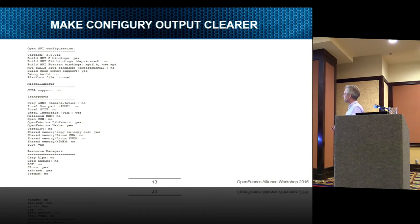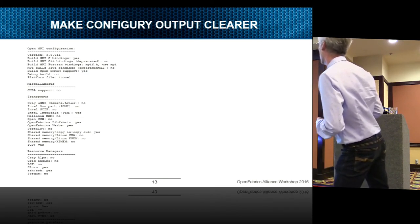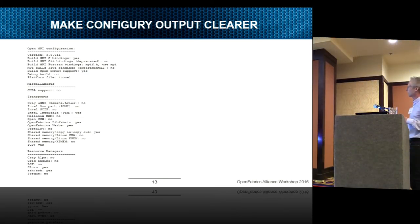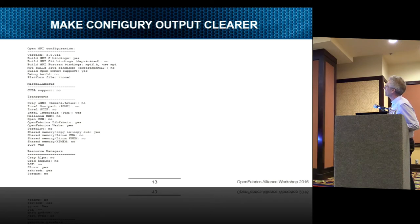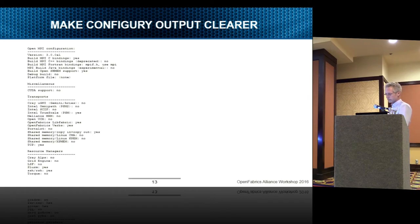One of the first things we've done in master is to simplify it for the administrator. At the end of a configure run — this is an example I did on one of the TrueScale clusters at LANL — down here under transports it found no Cray, no Intel OmniPath, no SCIF, but it did find TrueScale. There was no Mellanox, no UCX at that build, but it did find LibFabric and also found OpenFabrics verbs. This feature isn't in 1.10.2 or 2.0; we might put it in 2.1.